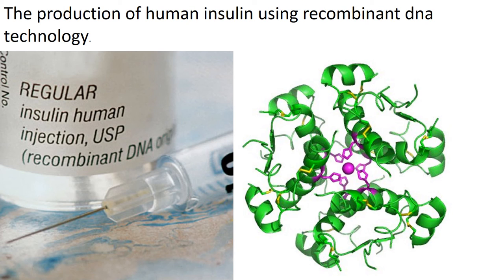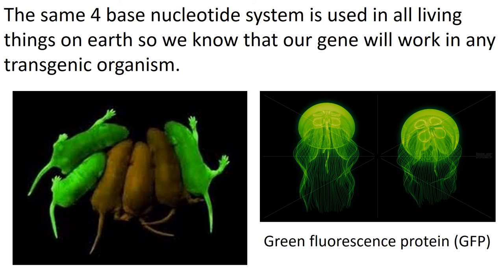For example, the best-known protein created using recombinant DNA technology is insulin. Insulin is needed to help diabetic people regulate their blood sugar levels. This is a really useful bit of technology, and the more genes we can identify, the more we can produce using this technique.